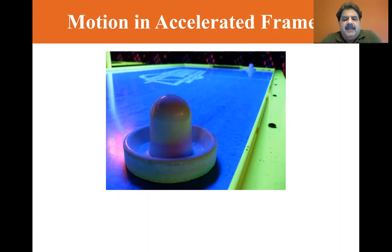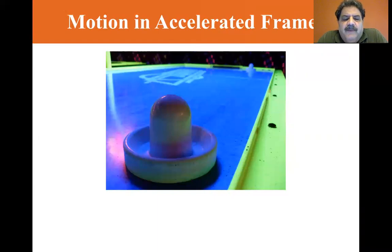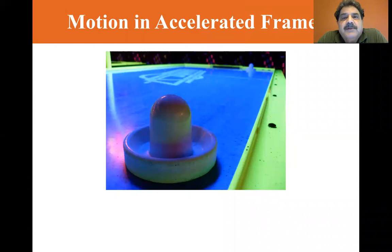As an example, let's look at an air hockey table on a train. The train moving at a constant velocity represents an inertial frame. The observer on the train sees the puck at rest remain at rest. Newton's first law appears to be obeyed.